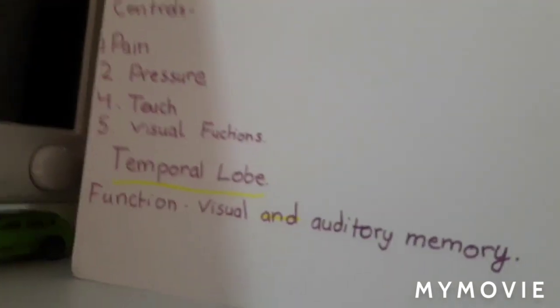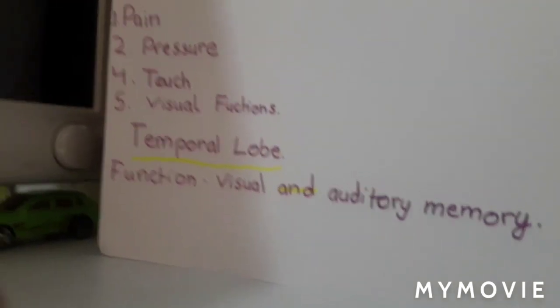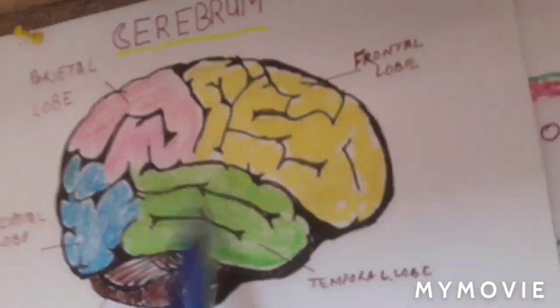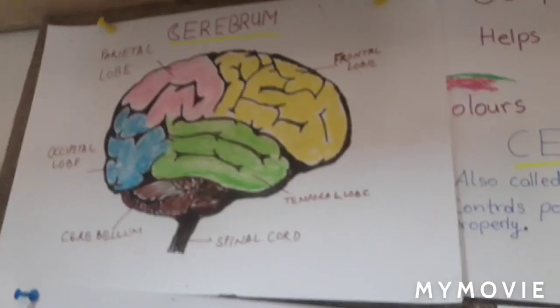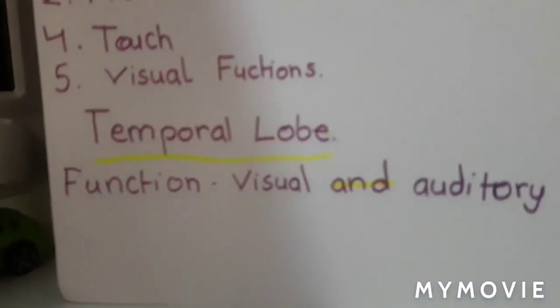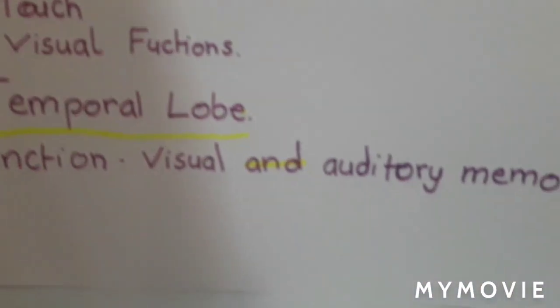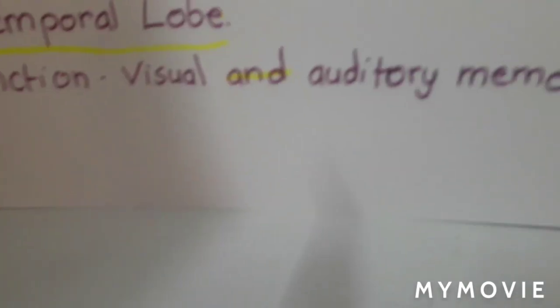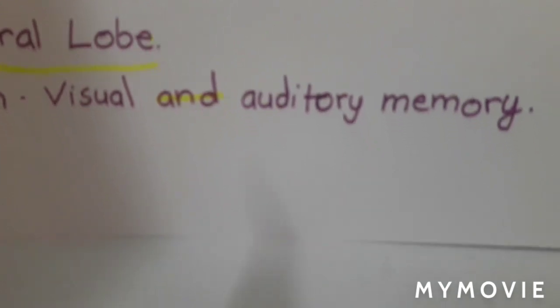Now let's look at the temporal lobe, which is the third lobe. It controls visual and auditory memory — it stores your memories.